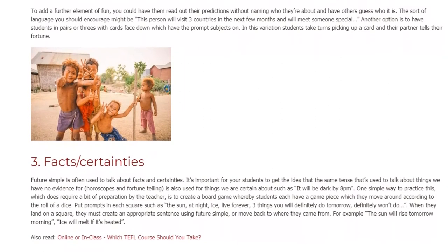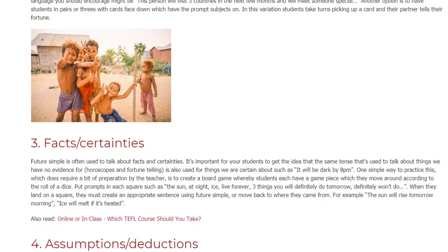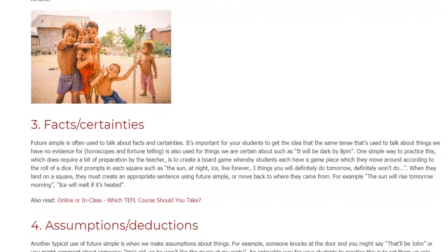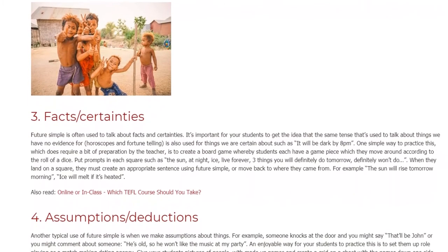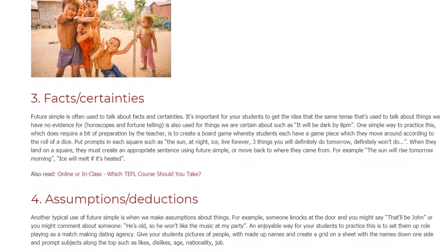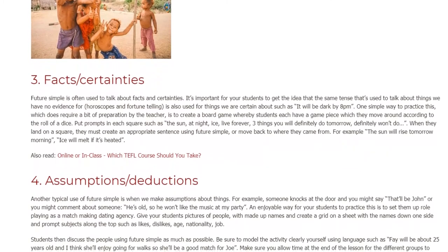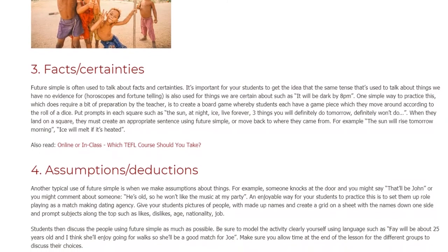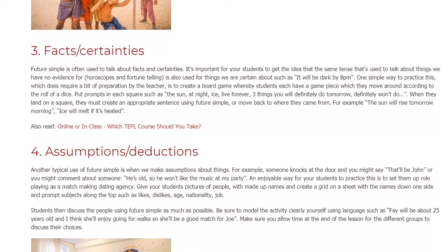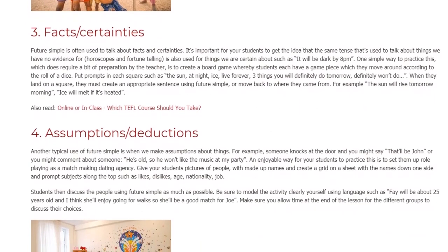3. Predictions with Evidence. One way to practice this, which does require a bit of preparation by the teacher — for example 'It will be dark by 8 p.m.' — is to create a board game whereby students each have a game piece which they move around according to the roll of a dice. Put prompts in each square such as: the sun, at night, ice, live forever, three things you will definitely do tomorrow, definitely won't do. When they land on a square, they must create an appropriate sentence using Future Simple or move back to where they came from. For example: 'The sun will rise tomorrow morning,' 'Ice will melt if it's heated.'